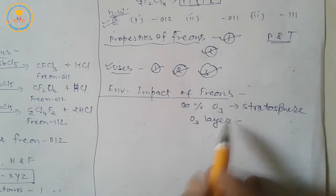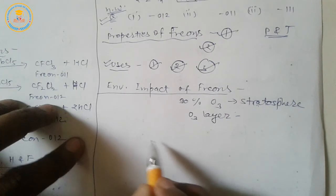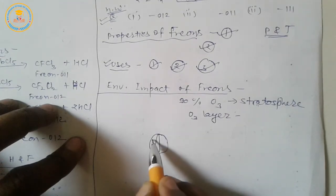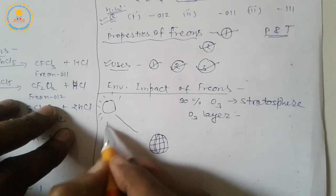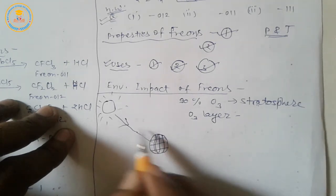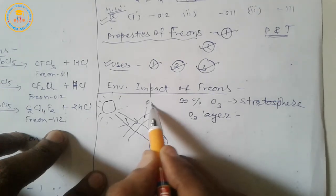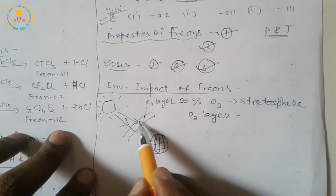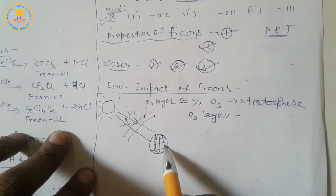Ozone layer absorbs about 95% of the harmful ultraviolet radiations and protects the atmosphere of earth. Suppose that this is our earth. Ozone layer absorbs 95% of the harmful ultraviolet radiation and protects the atmosphere of earth.